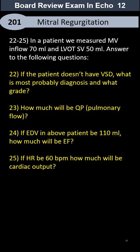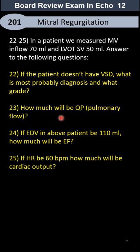Questions 22 to 25 — there are four questions in one case. We have a patient where we measure mitral valve inflow at 70 milliliters and LVOT stroke volume at 50 milliliters. If the patient doesn't have any intracardiac shunt, what is the most probable diagnosis? And how much will be the pulmonary flow — meaning pulmonary artery — if we measure it, considering these findings?